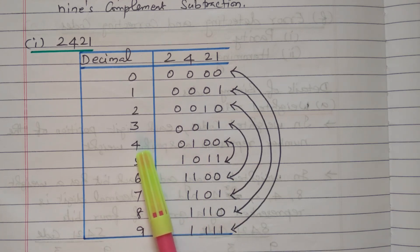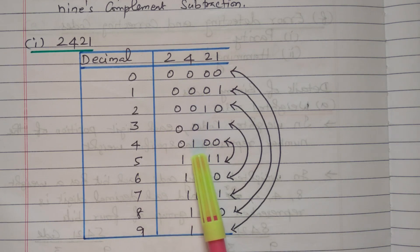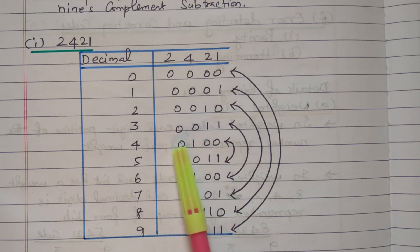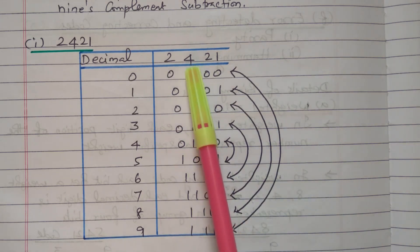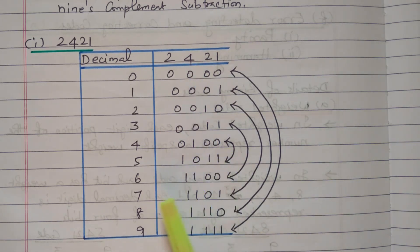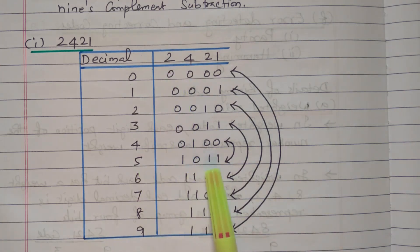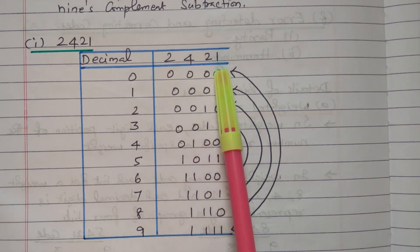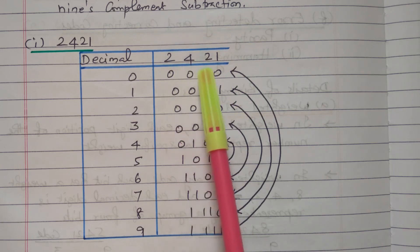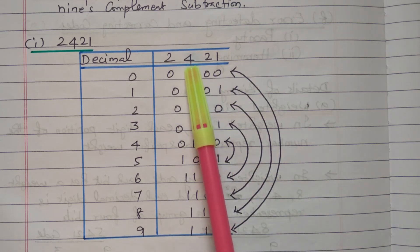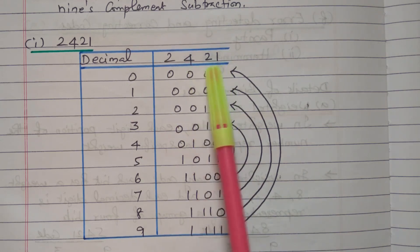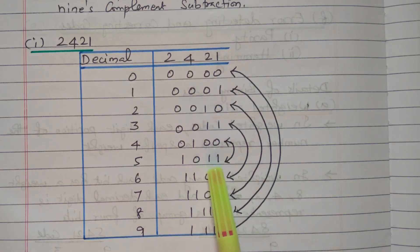For four, the second position is made one so that we will get the total weightage of four. We can also make first and third position one — two plus two equals four also. Here we make the second position one: 0,1,0,0. For five, we make the first, third, and fourth positions one. First position is two, third position two — two plus two is four, four plus one is five: 1,0,1,1. Another method is to make second and fourth positions one — four plus one equals five also.